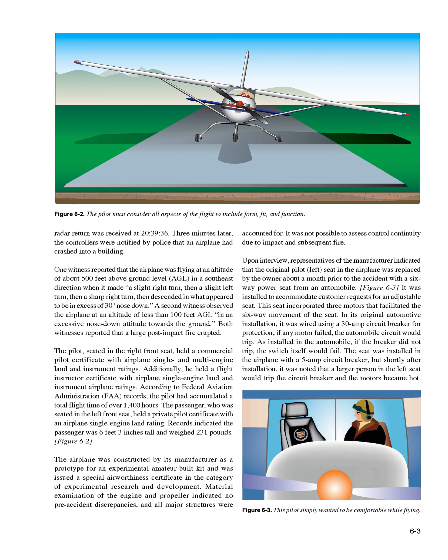One witness reported that the airplane was flying at about 500 feet AGL in a southeast direction when it made a slight right turn, then a slight left turn, then a sharp right turn, then descended in what appeared to be in excess of 30 degrees nose-down. A second witness observed the airplane at less than 100 feet AGL in an excessive nose-down attitude toward the ground. Both witnesses reported that a large post-impact fire erupted.